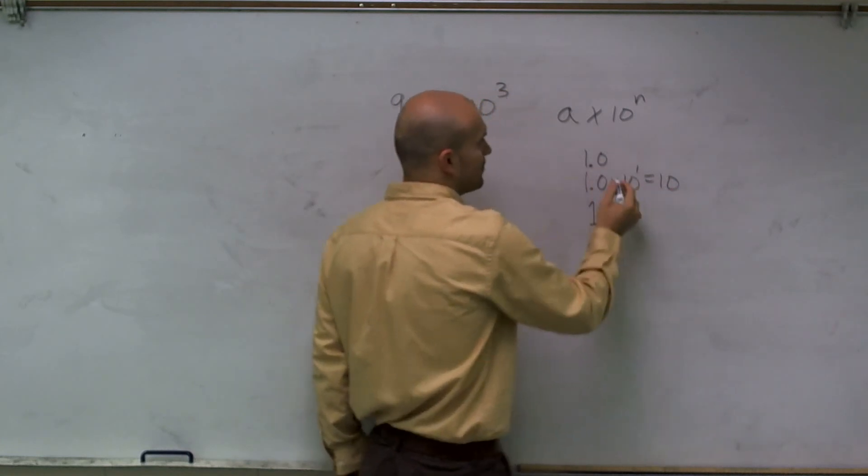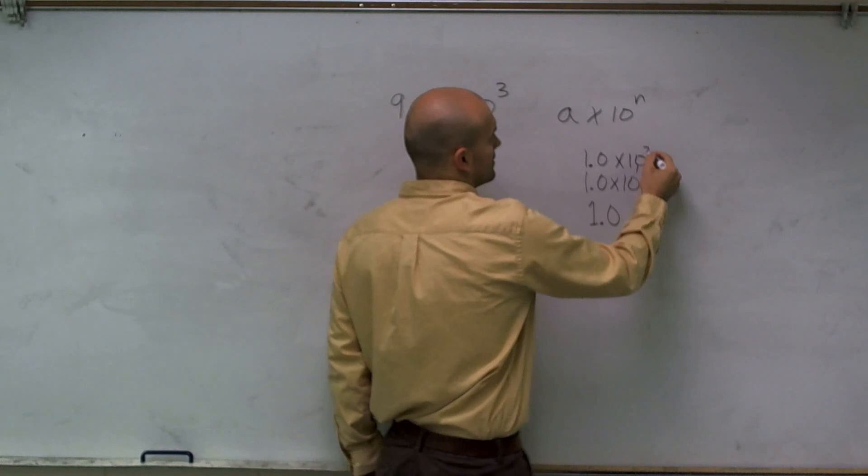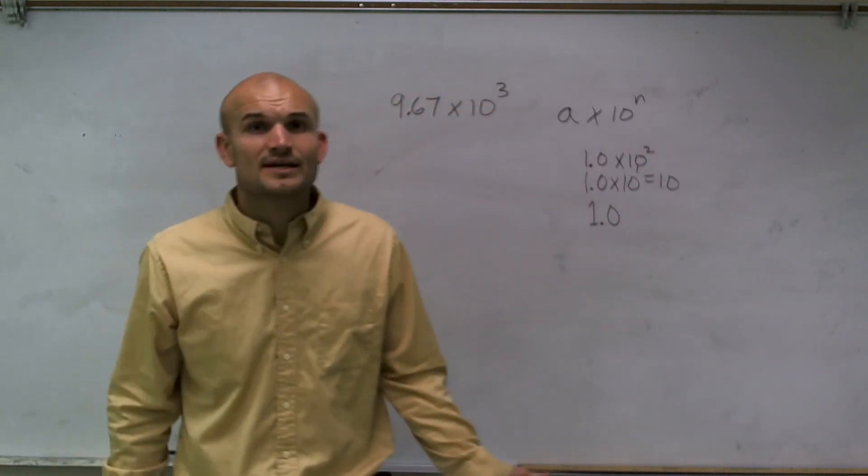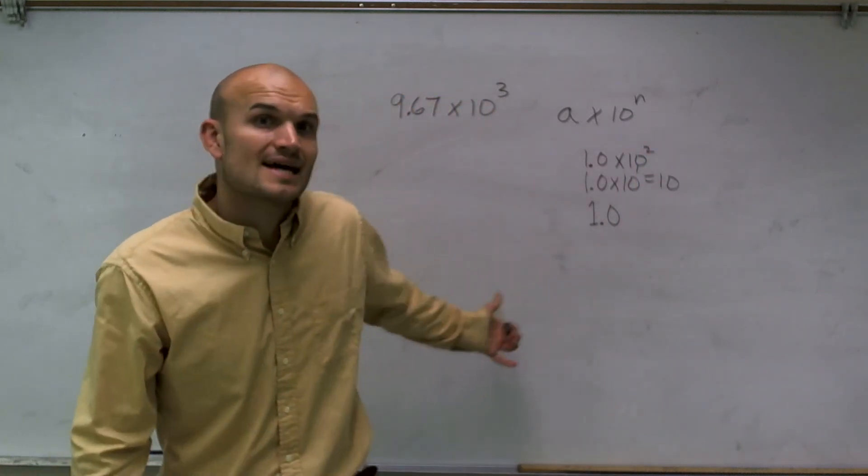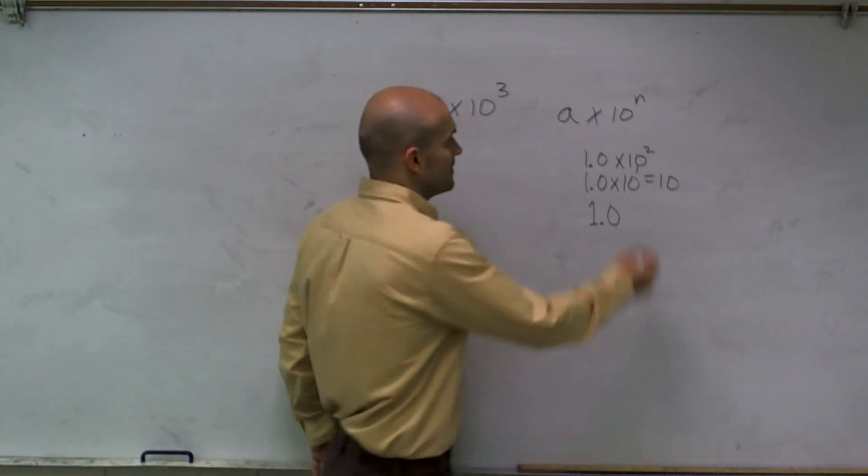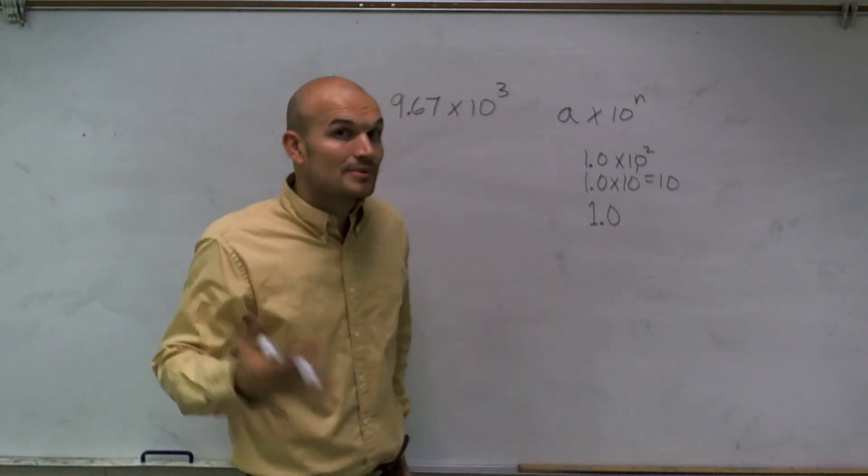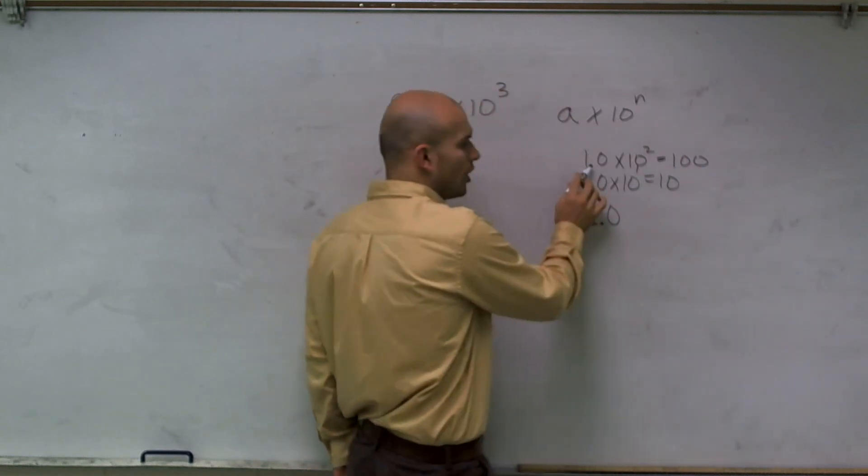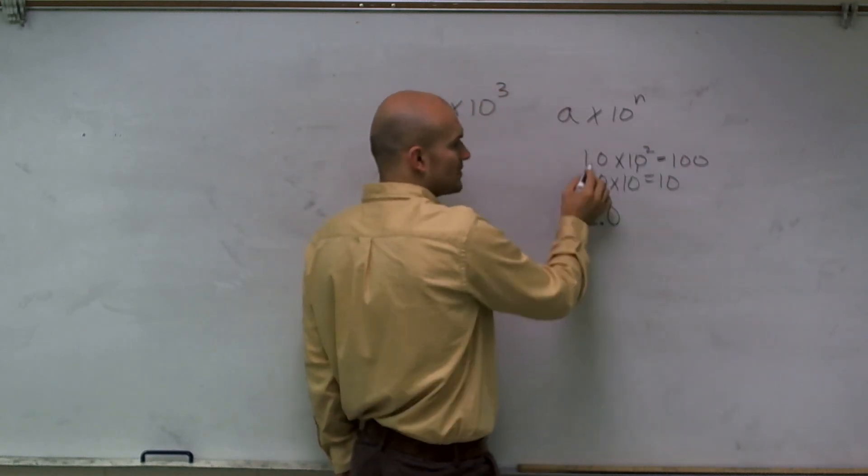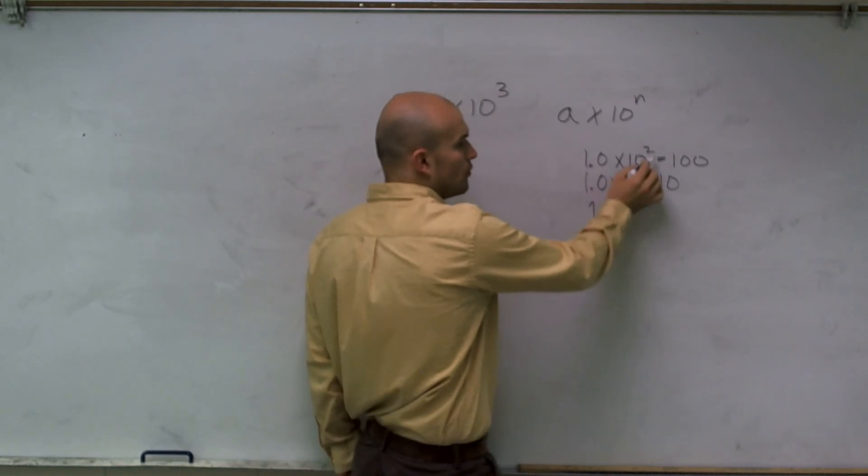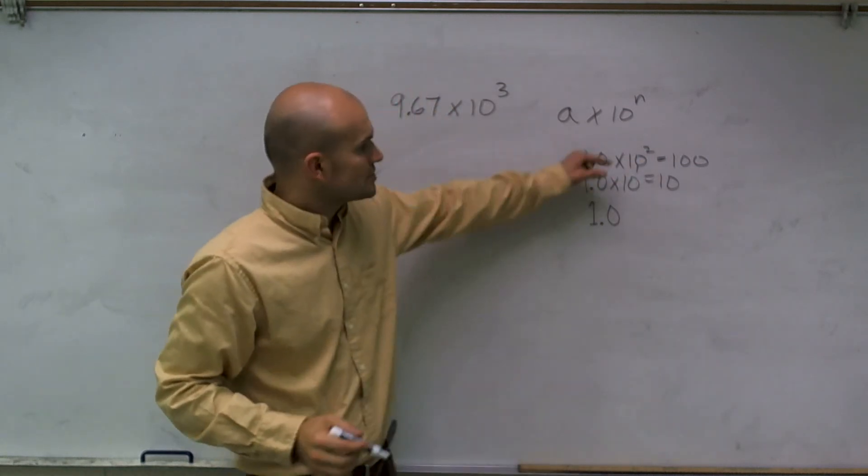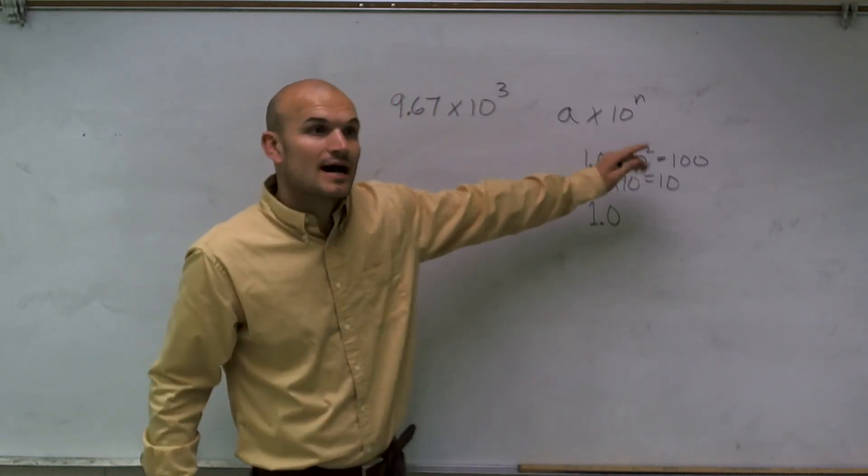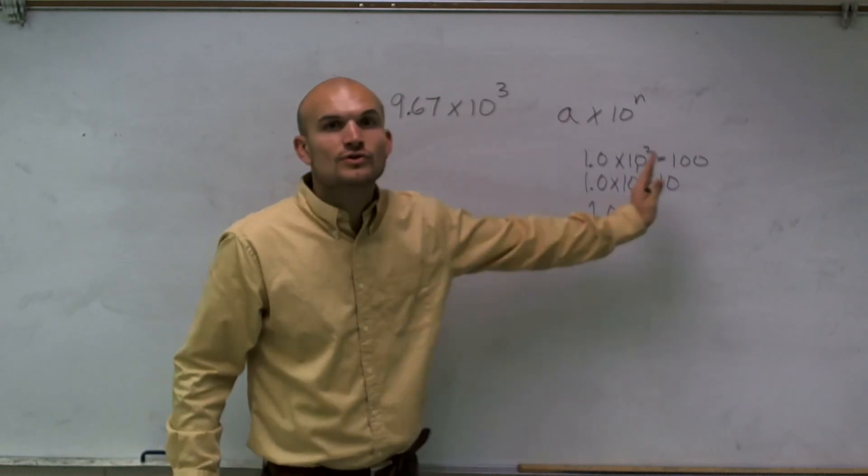Or let's say I take 1.0 times 10 to the second power. Well, that's the same thing as multiplying 1.0 times 100, where if I'm going to multiply 1 times 100, I know I'm going to get 100. So theoretically, all I really did when multiplying it times 10 to the positive exponent, I'm just moving the decimal over two units to the right. So if the exponent is positive, I'm going to move it that many units to the right.